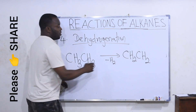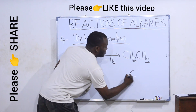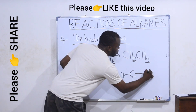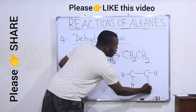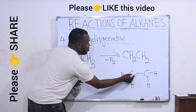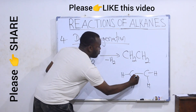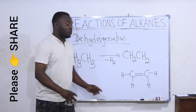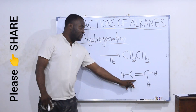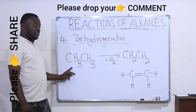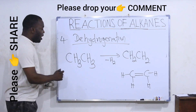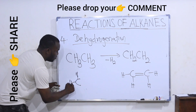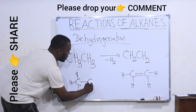Remember, CH2-CH2 — because this carbon is having only three bonds around it, we will put a double bond here in order to complete its four. The same thing applies to the other carbon. This is ethane. So if two hydrogen atoms are removed from an alkane, you produce an alkene.